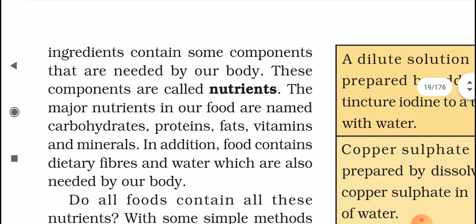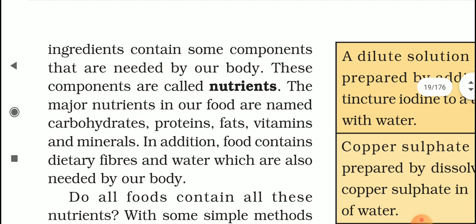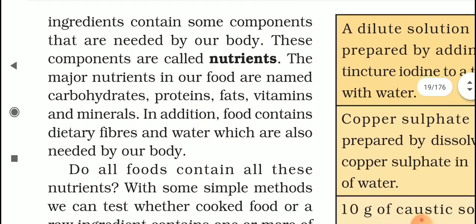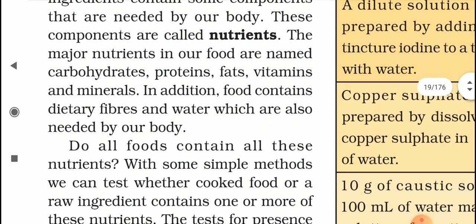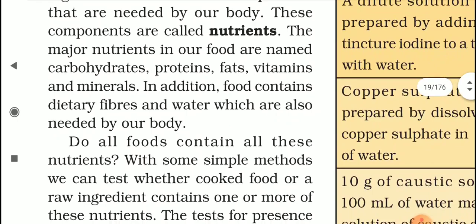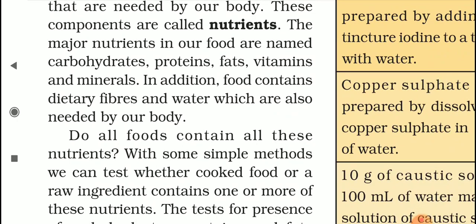Milk is a balanced diet — we get all the nutrients from milk, whether they are protein, carbohydrates, fat, vitamins, etc. These ingredients contain some useful components, and these components are called nutrients. The major nutrients in our food are carbohydrates, proteins, fats, vitamins, and minerals. These are the basic nutrients that we need.